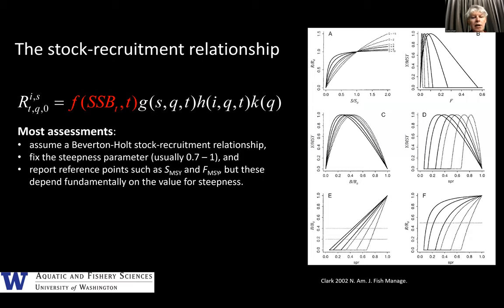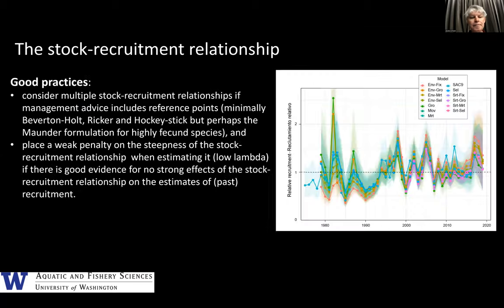Starting with the first component — the biomass effect. When I looked at the assessments, most use a Beverton-Holt stock-recruit relationship and fix the steepness parameter. This is consequential because many assessments report S_MSY and F_MSY, so if you're going to do that you really need to consider your form of the stock-recruit relationship. As noted in Clark's work, there is a fundamental relationship between those parameters and the assumed steepness.